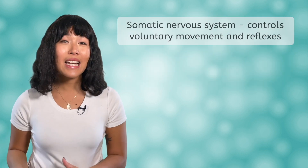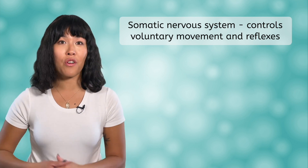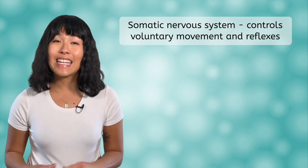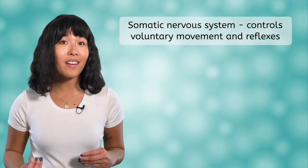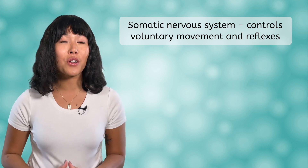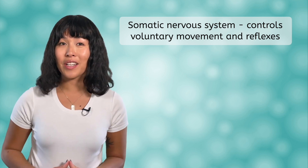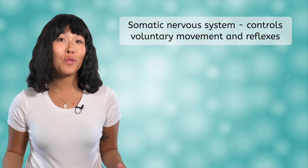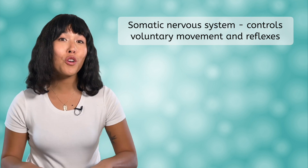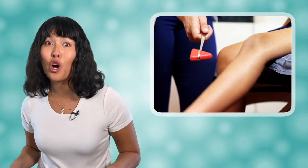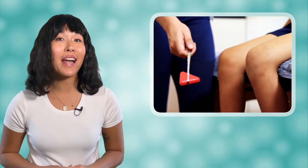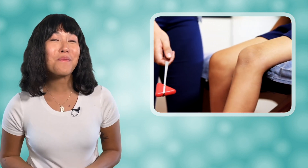The somatic system controls the motor neurons. It connects to the skeletal muscles in the head, trunk, and limbs and is under voluntary control. It is also responsible for your reflexes. Remember when your doctor taps just below your kneecap and your lower leg jerks up? That's your somatic nervous system at work.